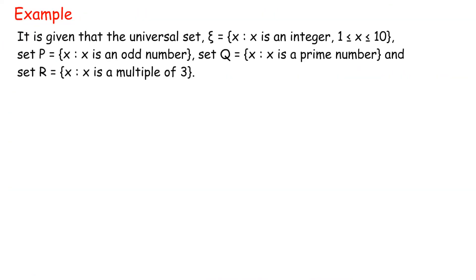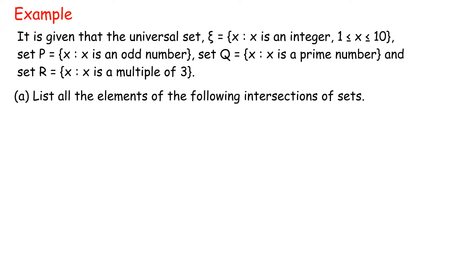Example. It is given that the universal set equals {x : x is an integer, 1 ≤ x ≤ 10}. Set P equals {x : x is an odd number}, set Q equals {x : x is a prime number}, and set R equals {x : x is a multiple of 3}. Part A: List all the elements of the following intersections of sets. 1. P intersect Q, 2. P intersect R.